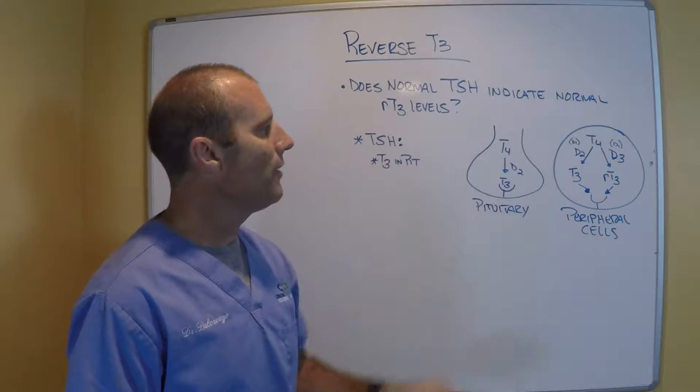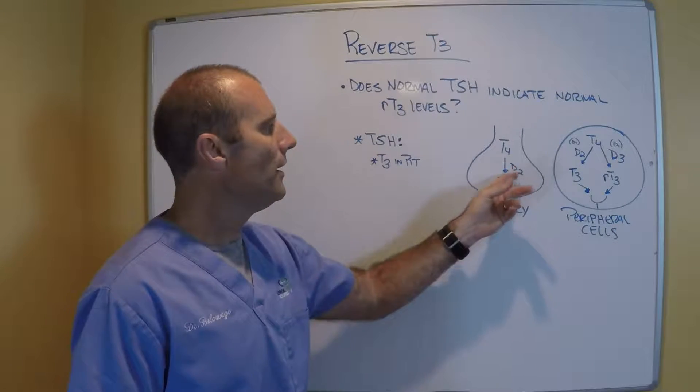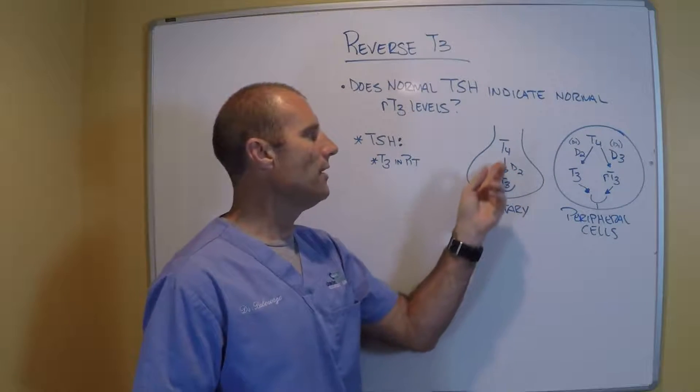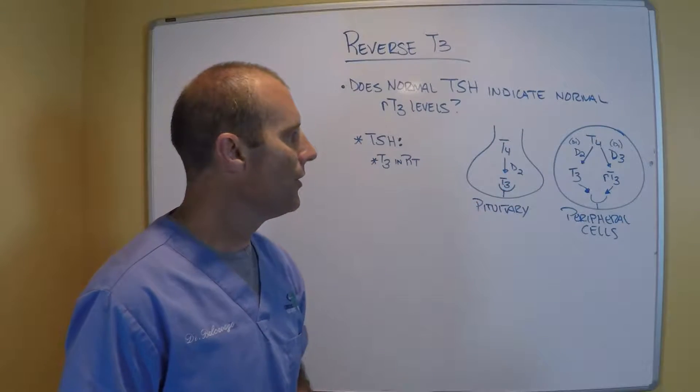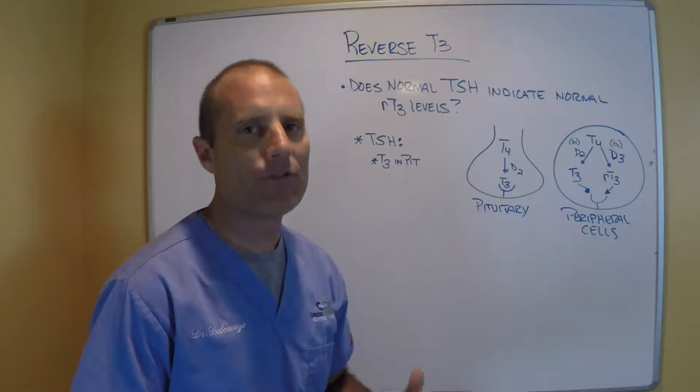Because there's no D3 at the pituitary gland under the same circumstances, only D2 is produced and T4 can only be converted to T3, which is why the pituitary gland can become saturated.